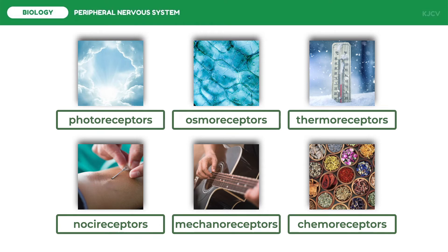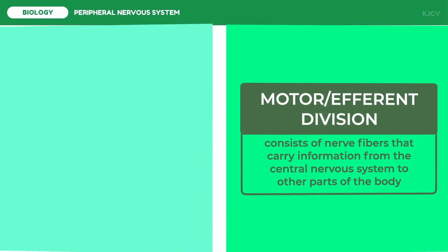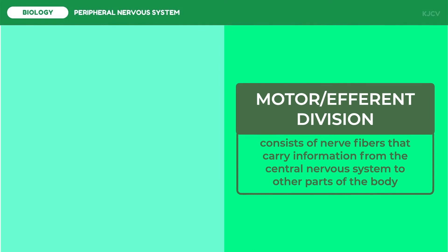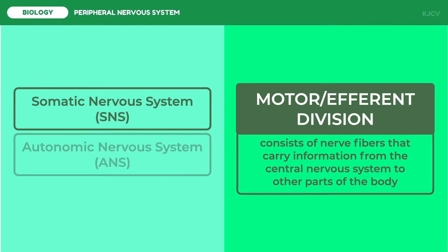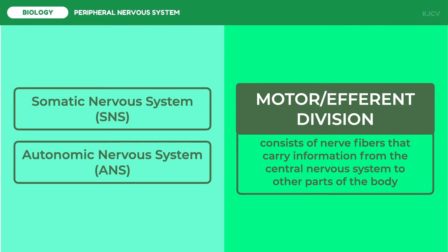Now that we have information from the afferent division, this will be essential for the control of the efferent output, which is managed by the motor or efferent division. The efferent or motor peripheral nervous system has two major divisions: the somatic nervous system and the autonomic nervous system.